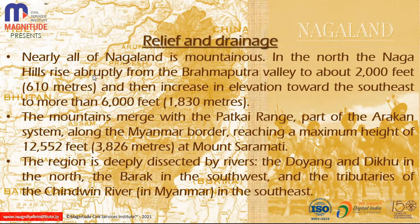Regarding relief and drainage, nearly the whole area is mountainous. The Naga Hills rise from the Brahmaputra Valley, rising from 2,000 feet and increasing in elevation in the south-east direction to 6,000 feet. The Patkai Range, part of the Arakan system on the Myanmar border, has a maximum height of 12,552 feet at Mount Saramati. The region is dissected by the Doyang and Deku rivers to the north, and the Barak River with its tributary the Chindwin River flows to the south-east towards Myanmar.